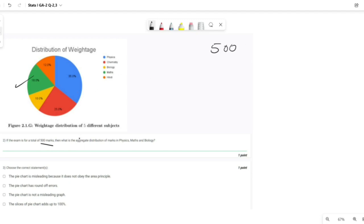Then what is the aggregate distribution of marks in Physics, Maths and Biology? So we are given: blue is Physics 35%, this 35% is Physics, 18% is Maths, and Biology yellow color is 10%.